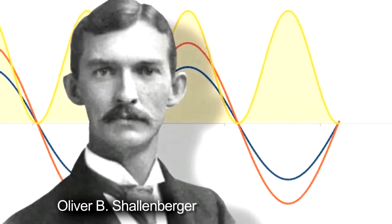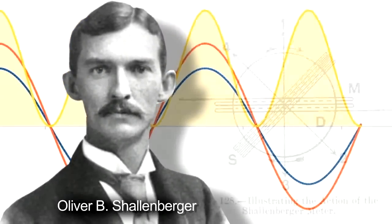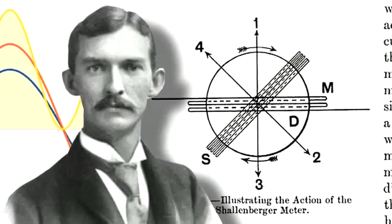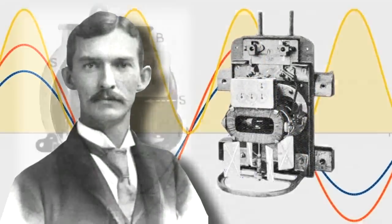Oliver B. Schallenberger was one of Westinghouse's best experts on AC power. He used magnetism to create rotation, and the rotations could be counted, and he produced the world's first watt-hour meter.